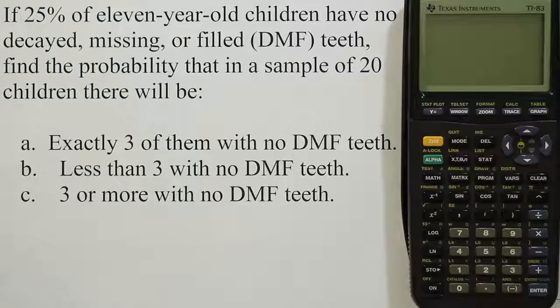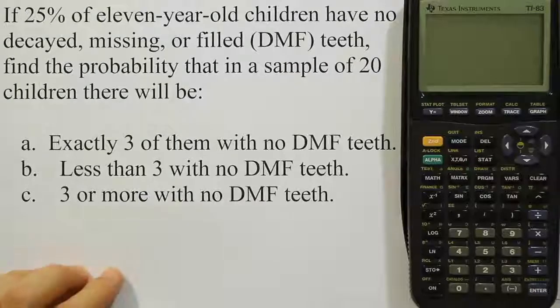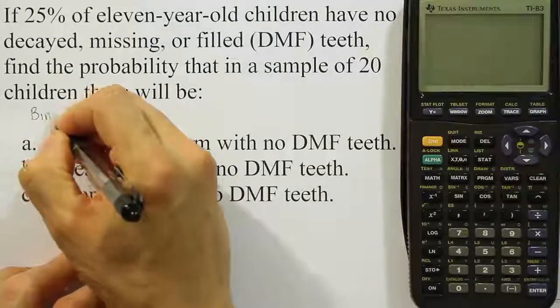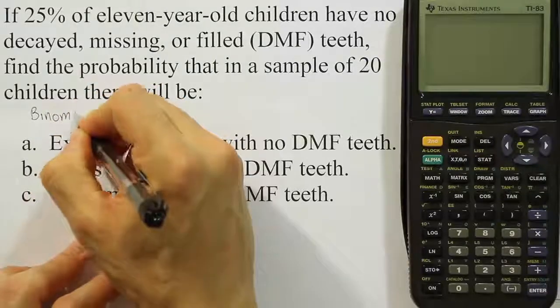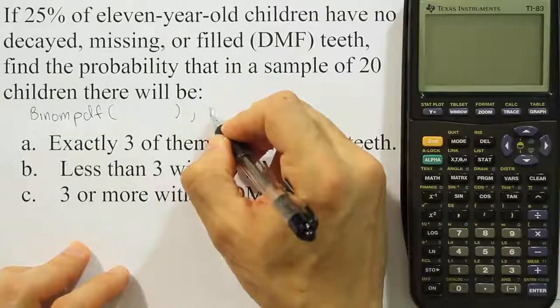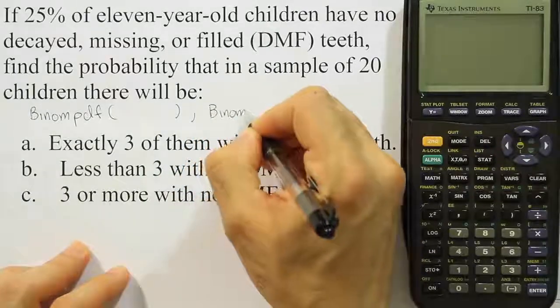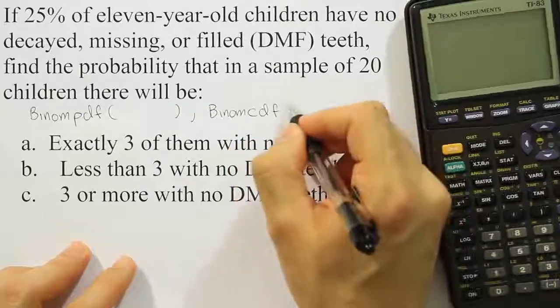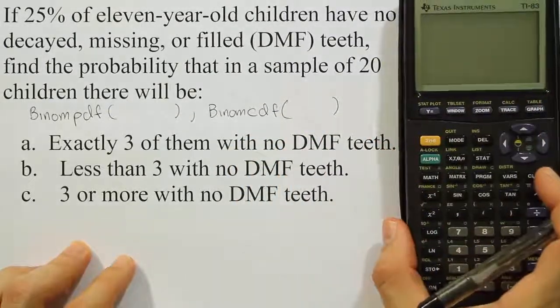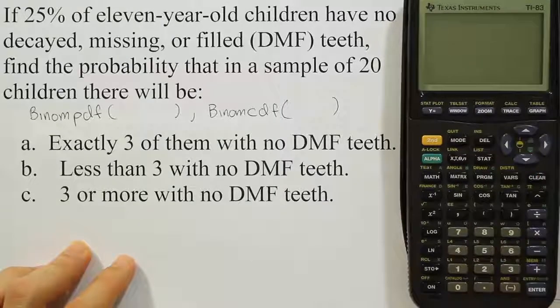In this video we're looking at finding binomial probabilities with the graphing calculator. Now the graphing calculator has two functions to do this. There's a function called the binompdf and then there's a function called the binomcdf. So let's first talk about those two things before we get into actually using the calculator.